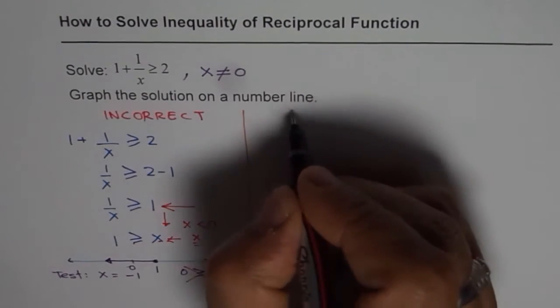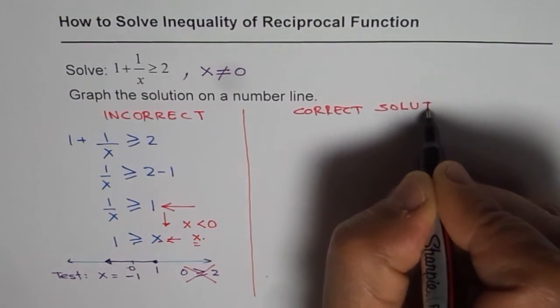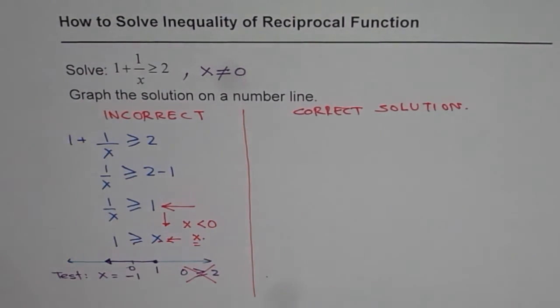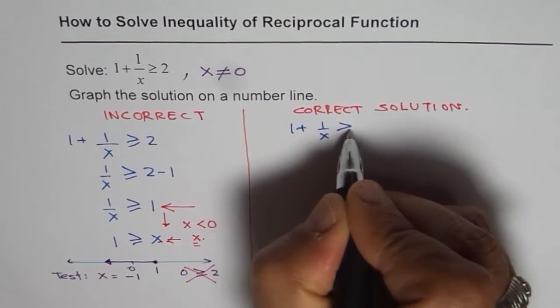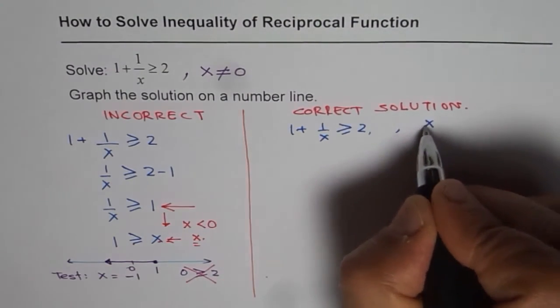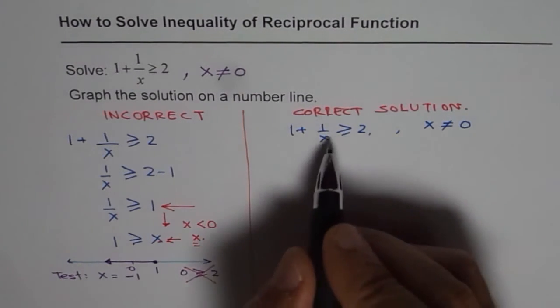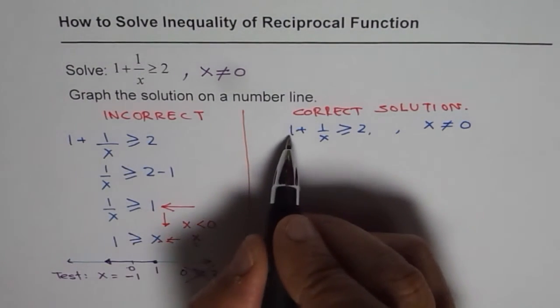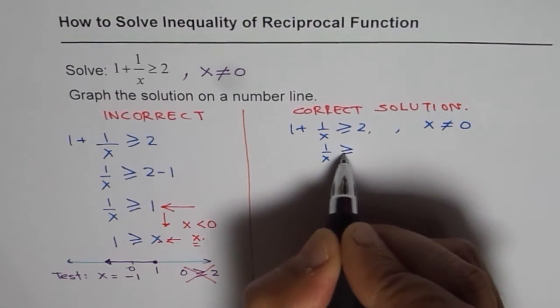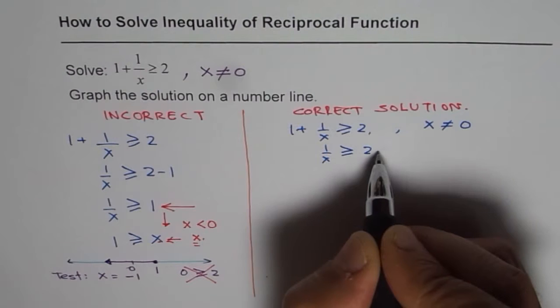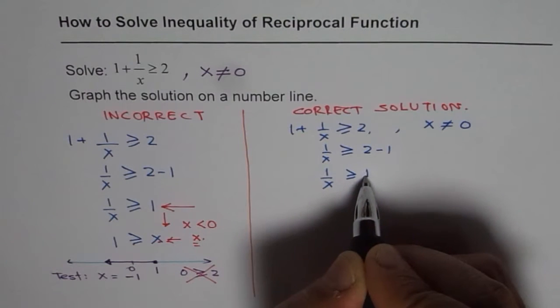Now as we found that 1 plus 1 over x greater than equals to 2 has a restriction. And the restriction is that x is not equal to 0. It should be spelled out in the very beginning. Now we will do the same step that is taking away minus 1 or adding minus 1 both sides. So we get 1 over x is greater than equals to 2 minus 1. Which is 1 over x is greater than equals to 1.